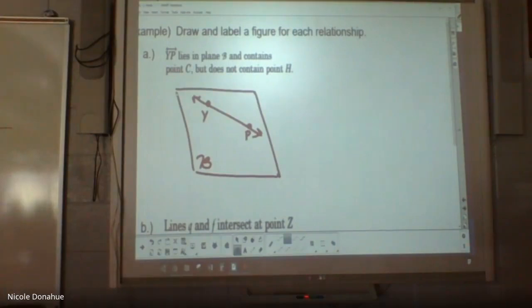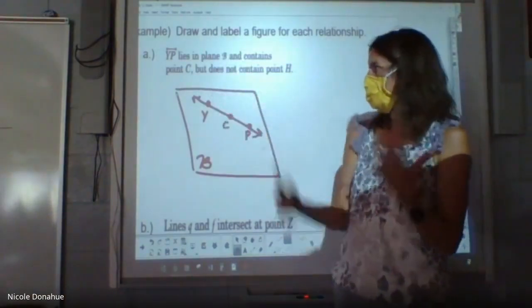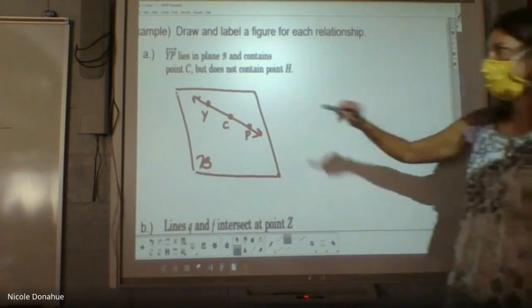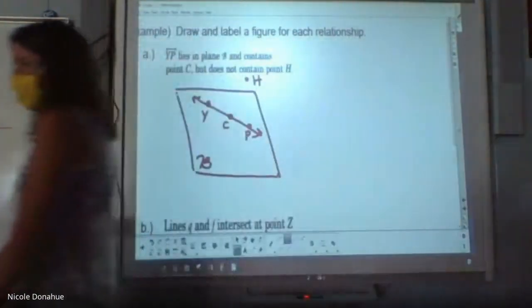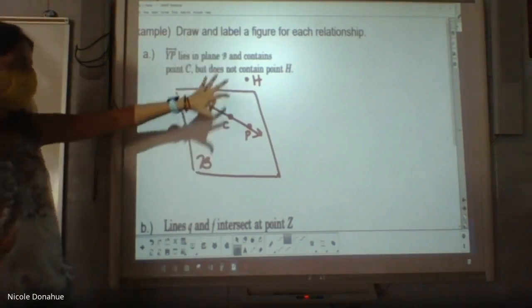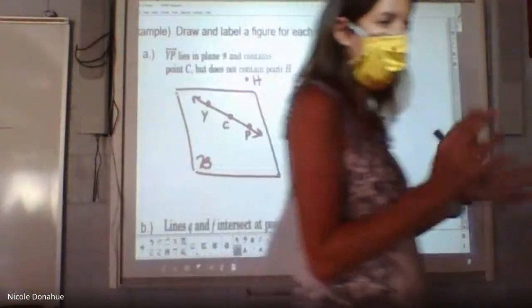So YP lies in that plane. So I need to draw a line that's on that plane that's called YP. And I'm going to put some dots on it, Y and P. And it says it contains point C. So where should the C go? In the plane. Do you think it means the line is, it's on the line too? That's kind of a little unclear. I'm just going to put C on here. There's no reason not to. That's perfectly fine. There can be hundreds of points on that same line. But it does not contain point H. So where do you think H should go? Outside.